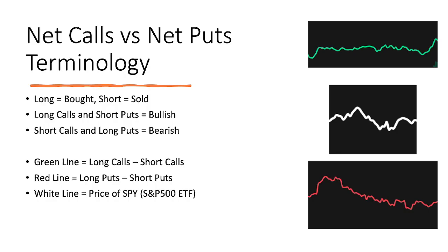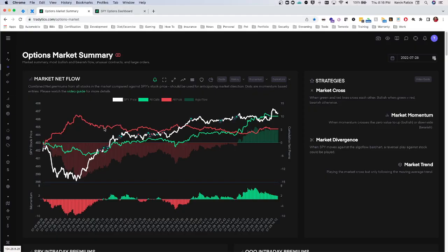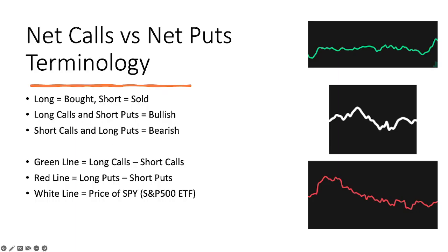The first thing we have to talk about with market net flow is what these lines mean — the red line, the green line, and the white line. Just to fill out some basic terminology: if you're new to options trading, when you're buying a call, that means you're long a call. If you're selling a call, you're short a call. If you're buying a put, you're long a put. And if you're selling a put, you're short a put.